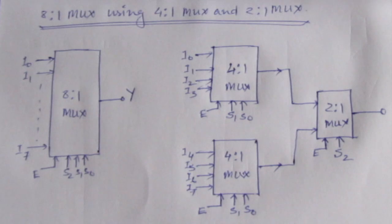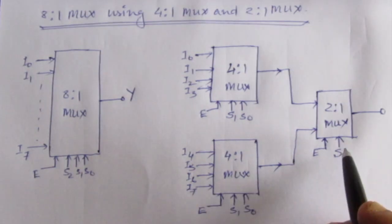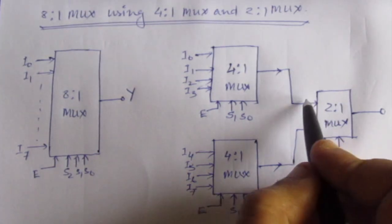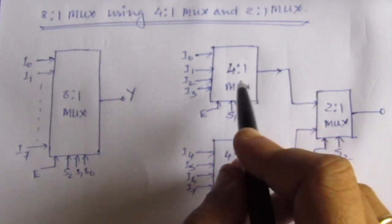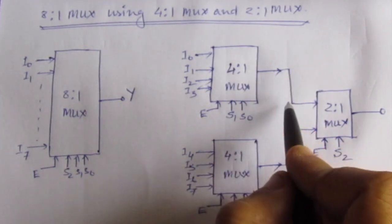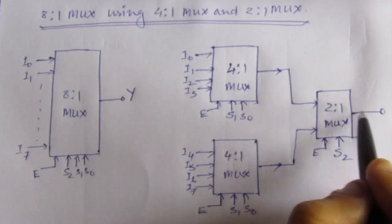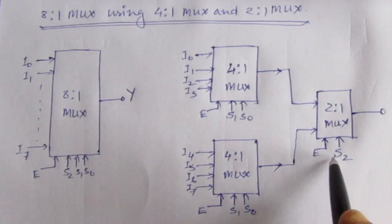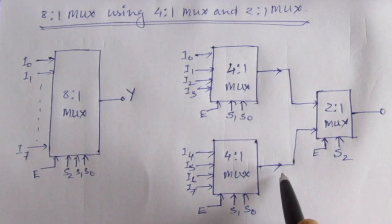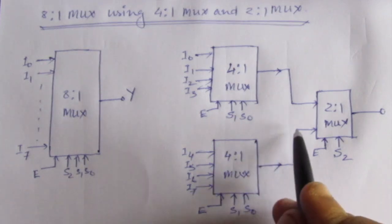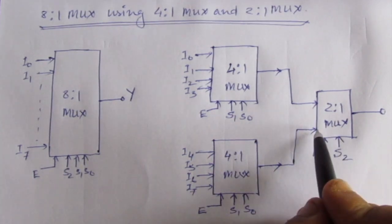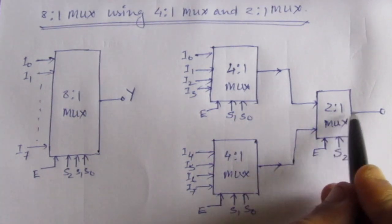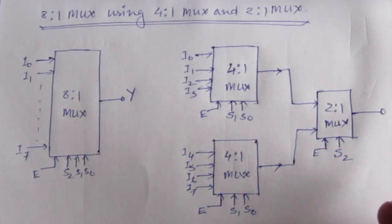Let us understand the operation. For the 2-to-1 multiplexer, when S2 equals 0, the upper input line is enabled — whatever is coming from the upper 4-to-1 multiplexer will be directed to the output port. When S2 equals 1, the output of the lower 4-to-1 multiplexer will be directed to the input and then to output Y. Now we will make the truth table.